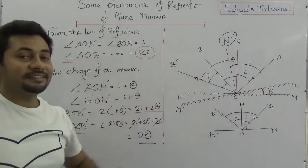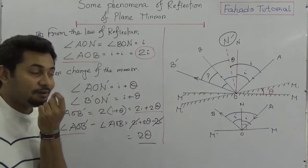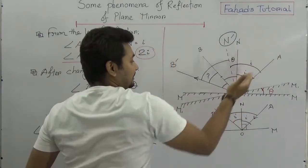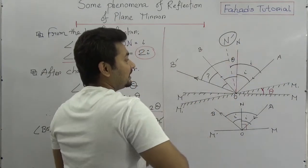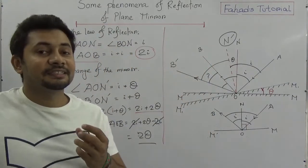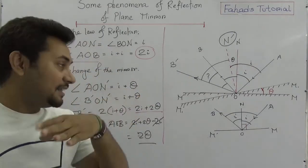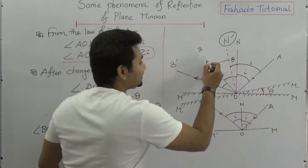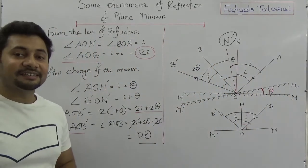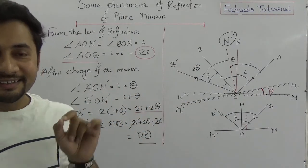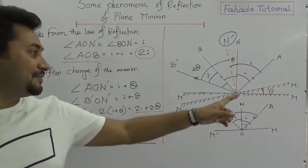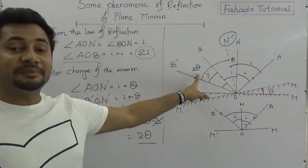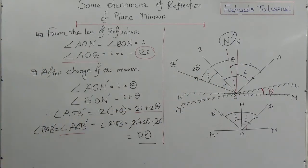So what we got is that the new angle — the change in the reflected ray — is 2 theta. The mirror was rotated by theta, and the reflected ray changed by 2 theta. So if the value of theta is 5 degrees, then the reflected ray will shift by 10 degrees. It is just twice. I hope you understand this very simple procedure of proving this interesting phenomenon that takes place in the case of a plane mirror.